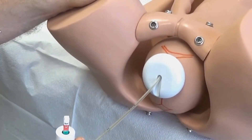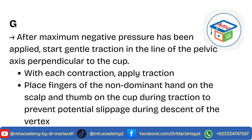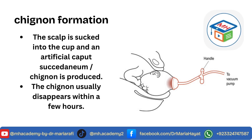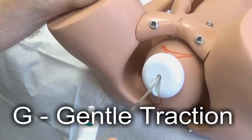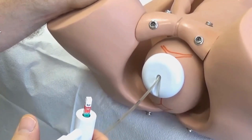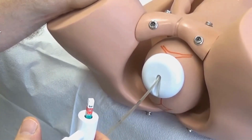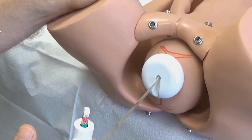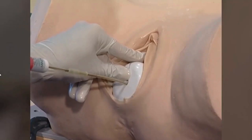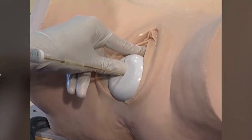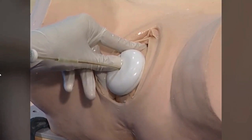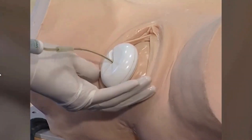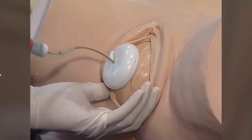G for gentle traction. After maximum negative pressure has been applied, start gentle traction in the line of the pelvic axis, perpendicular to the cup. With each contraction, apply traction. Place the fingers of the non-dominant hand on the scalp and thumb on the cup during traction to prevent potential slippage during descent of the vertex.